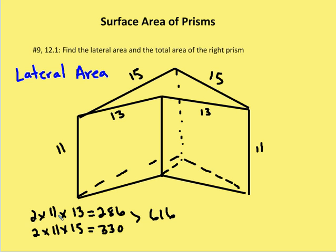So I have two times 11 times 13. That equals 286. Those are for the front rectangles. Then I have two by 11 by 15. Those are for the back rectangles. Those equal 330 squared units. So my area for the lateral area is going to be 616 units squared.